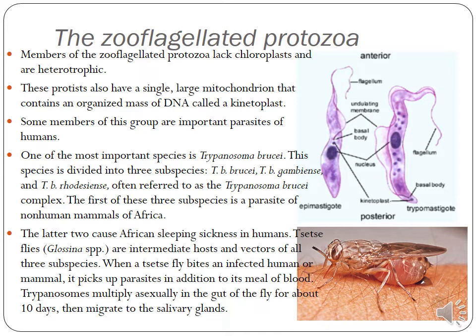Zooflagellate protozoa do not have chloroplasts and they are heterotrophic. These Protista have a single large mitochondrion that contains an organized mass of DNA called a kinetoplast. An important human pathogen among zooflagellates is Trypanosoma brucei, which causes sleeping sickness. This species is divided into three subspecies: Trypanosoma brucei brucei, Trypanosoma brucei gambiense, and Trypanosoma brucei rhodesiense.